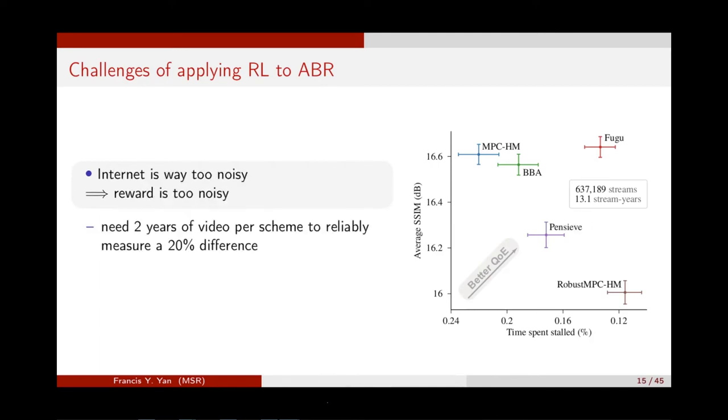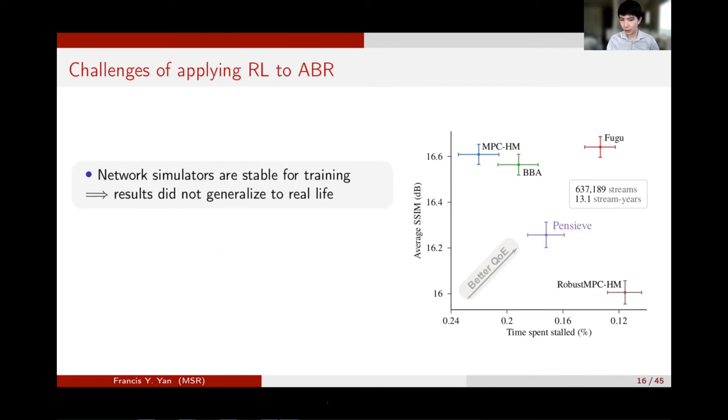We have a question here. How did you model the internet as an environment? What kind of features did you consider? That's a good question. For the exact modeling of the problem as the RL algorithm, I'll show more details later. But basically, some network conditions and packet level statistics. I'll show you later. Thank you.